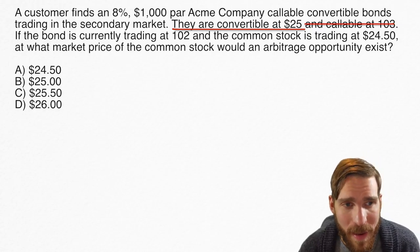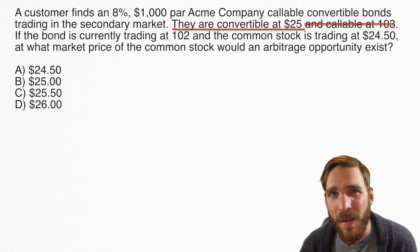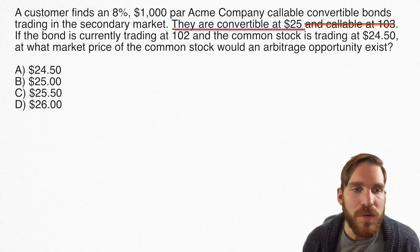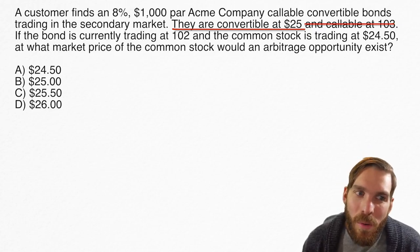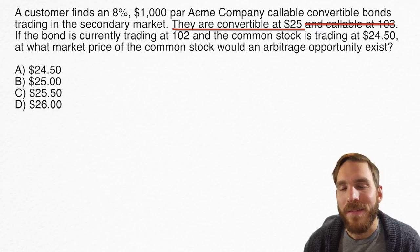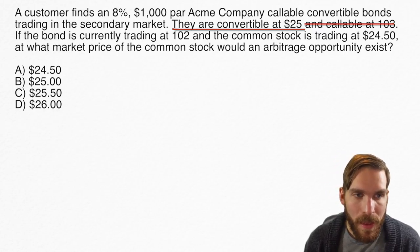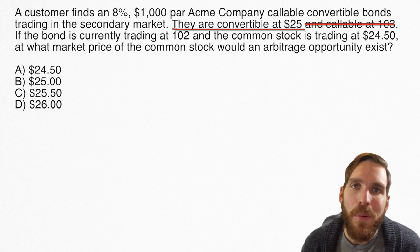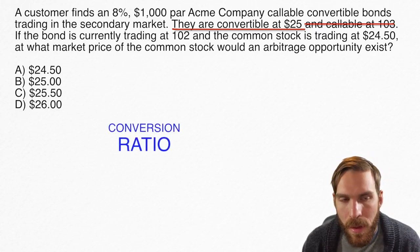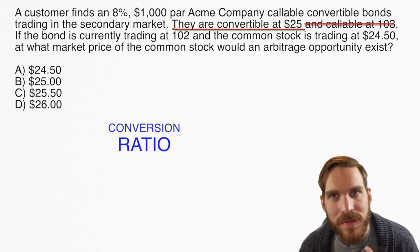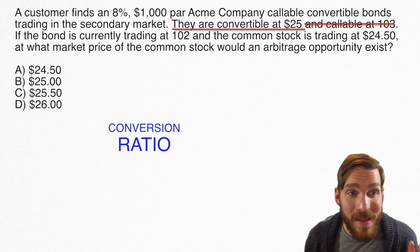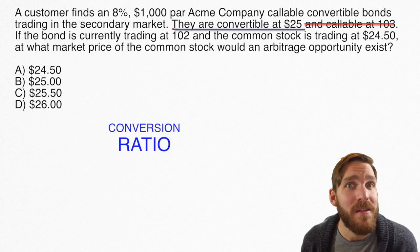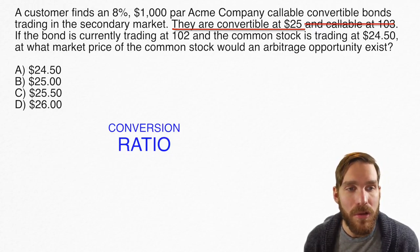There is one important piece of information: the bond is convertible at $25. On the surface, they've given us what's known as the conversion price, which doesn't tell us much right away. But it leads us to the most important thing for any convertible bond question involving profit or conversion: the conversion ratio. The conversion ratio tells you how many shares of stock you get if you convert your bond — whether that's 10 shares or 40 shares makes a big difference.